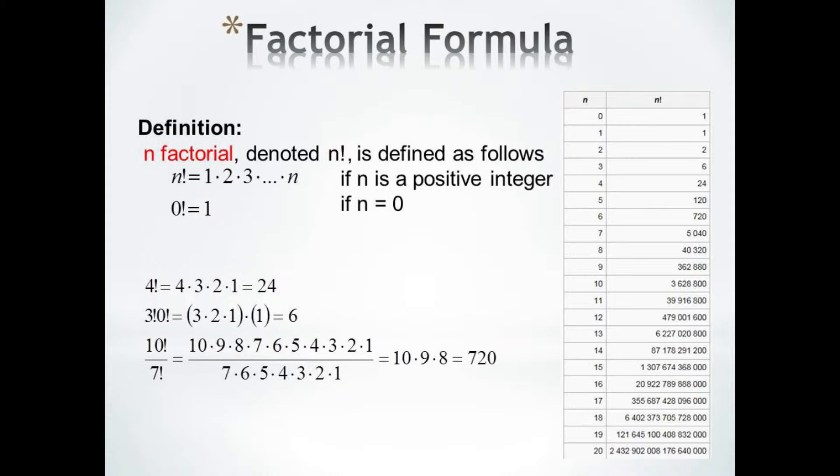For 3 factorial times 0 factorial, we calculate the factorials first. So 3 factorial is 6, and 0 factorial is 1, and the product is 6.